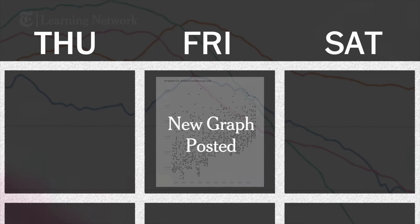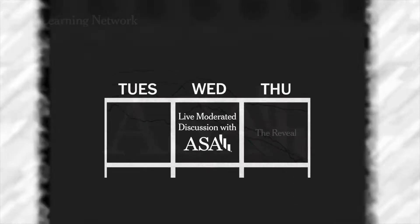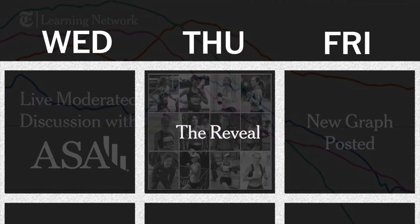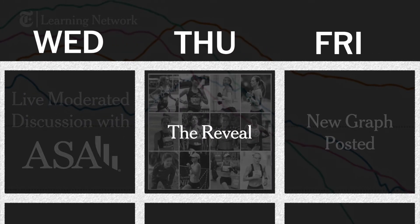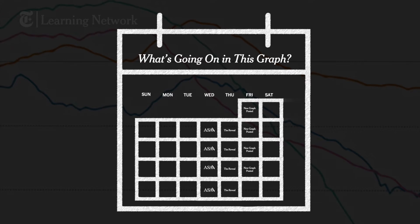With our partners at the American Statistical Association, we host a live moderated discussion about that graph in the comments section on the following Wednesday. Then on Thursday afternoons, we reveal additional background information about the graph and provide a free link to the article that the graph originally appeared in. The 'What's Going On in This Graph' feature aims to highlight a wide range of graph types and subjects with an emphasis on those that will be relevant to students.